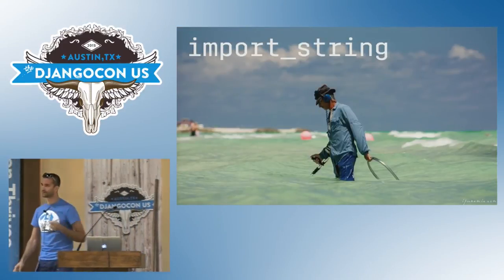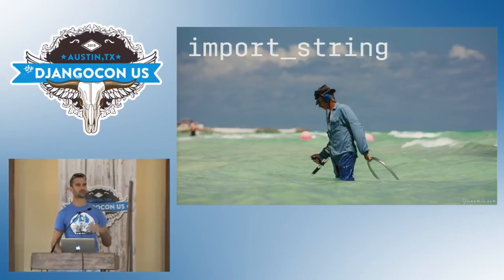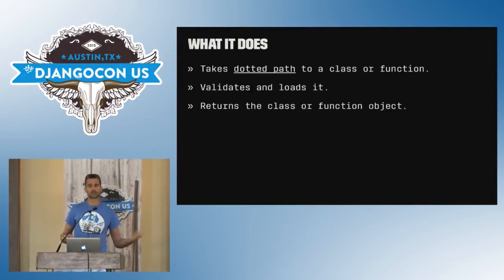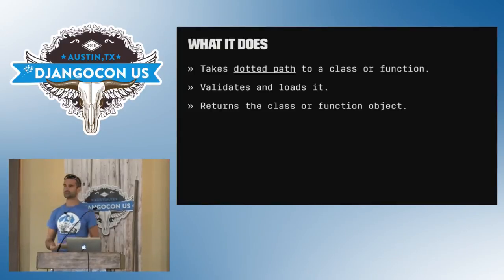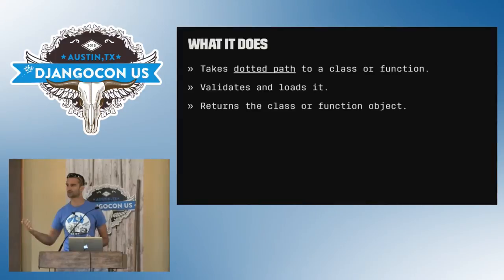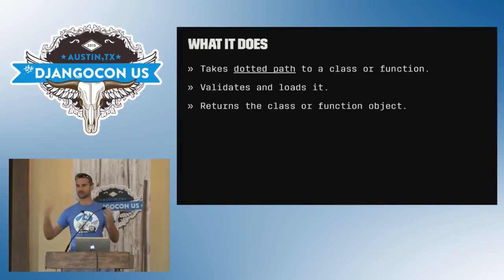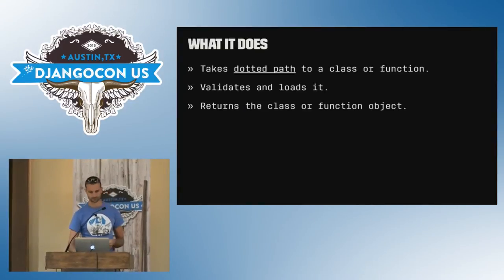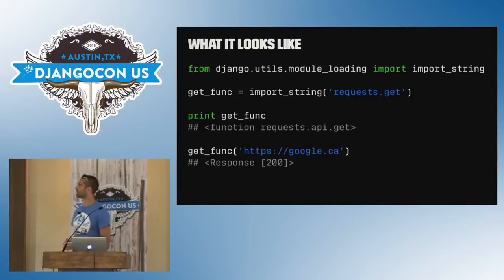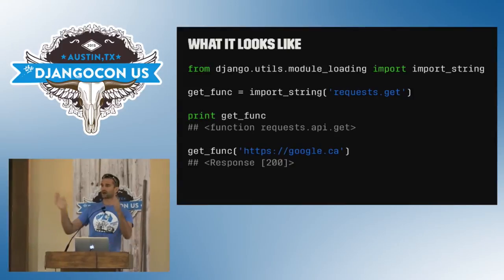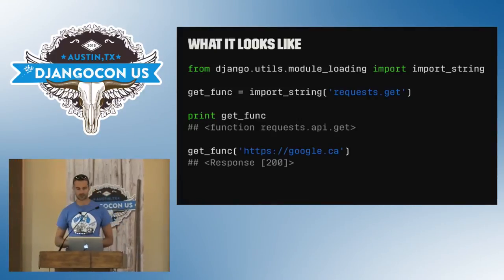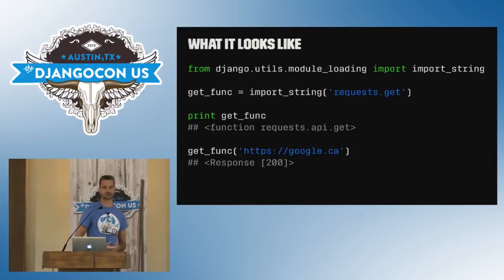The next favorite of mine is import_string, something I've found used in third-party projects. What it does is: you pass it a string that is a dotted path pointing to a class or a function, it validates that it's a valid path, and returns the actual imported function or class. In the case of the requests library, for example, you could pass in 'requests.get' as a string and what you get back from import_string is the function object — usable exactly the same way as if you'd imported requests and used requests.get.